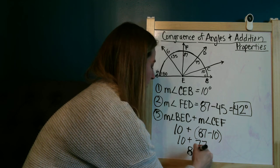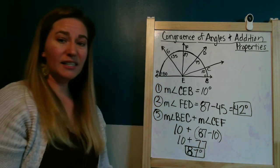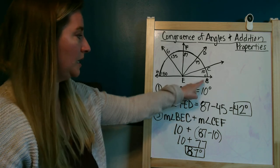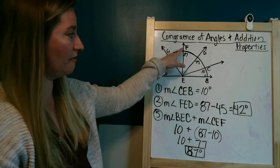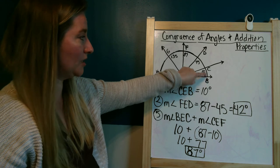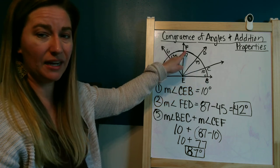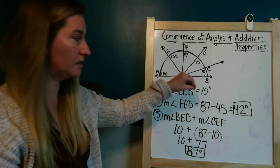Now, there's another way you could have looked at this. Instead of having to do all of the math, you could have paid attention to the fact that BEC added to CEF makes up this whole angle right here. And you could have easily just put that that was 87 degrees. So pay attention to what is being asked of you.